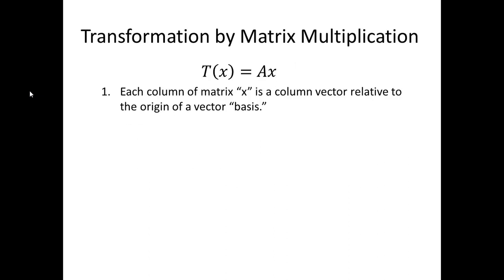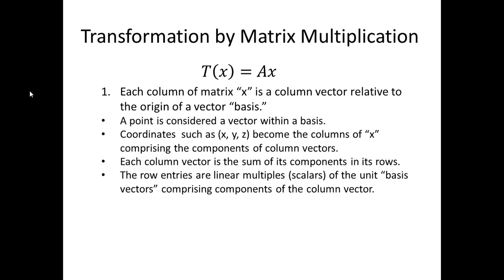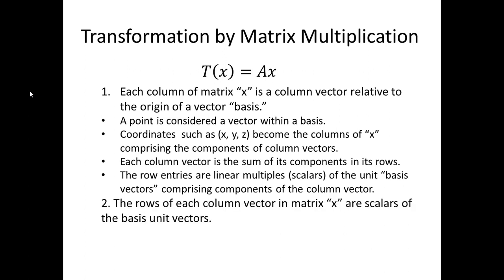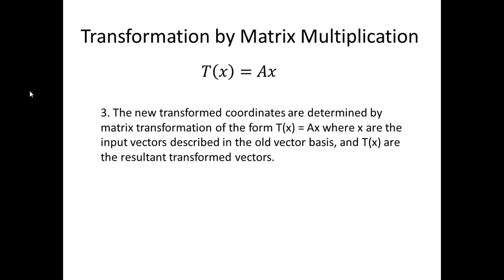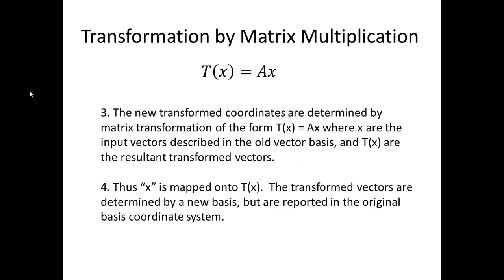Each column of a matrix is a column vector relative to the origin of a vector basis. The rows of each column vector in a matrix x are scalars of the unit basis vectors. In the example, the 3D Cartesian coordinate system is just the unit vectors (1,0,0), (0,1,0), and (0,0,1). The new transformed coordinates are determined by matrix transformation of the form Tx equals Ax. The input vectors are in the old basis, and Tx are the resultant transformed vectors. The x is mapped onto T of x. The transformed vectors are determined by the properties of a new basis, but are reported in the original basis coordinate system.